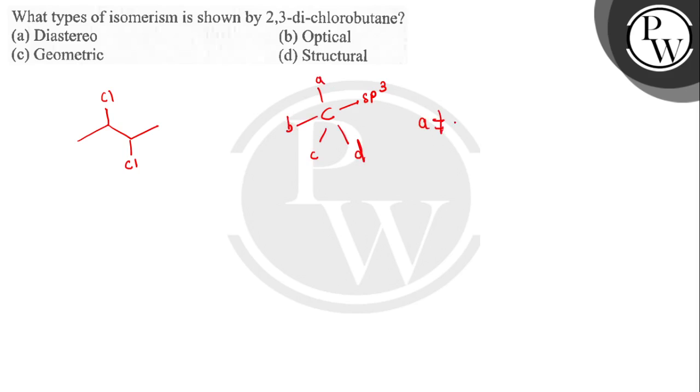And A is not equal to B, not equal to C, and not equal to D. Then this center is known as a chiral center, and if it is a carbon, then this is known as chiral carbon.